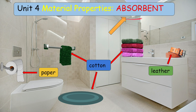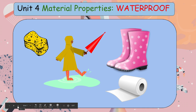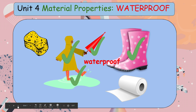Absorbent means a material that soaks up water easily. Then what is waterproof? It is a material that doesn't let water through it. Just like this coat, these boots are waterproof. The roof of this house is also waterproof. Examples of waterproof items: the raincoat, umbrella, and this pair of boots — these are all waterproof.